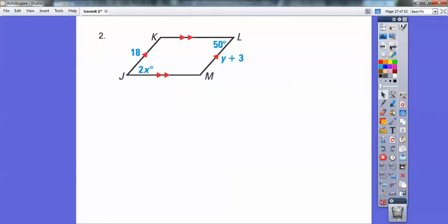Let's do that again. Same thing. Opposite sides are congruent. Opposite angles are congruent. So I'm going to divide by 2 on that 2x, and I'm going to subtract 3 on the y, and you get x equals 25, y equals 15.